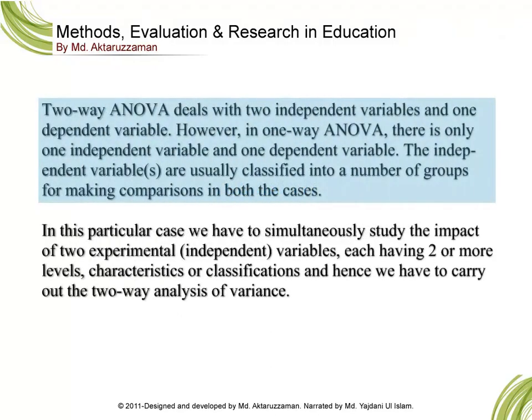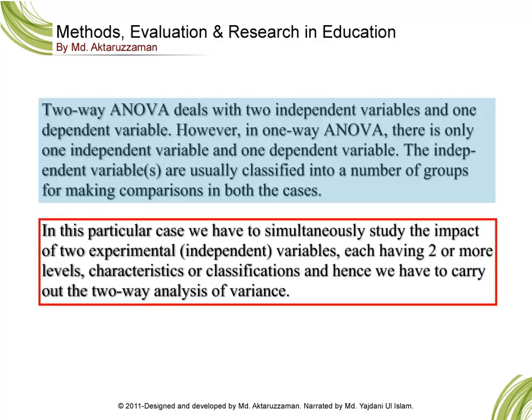Two-way ANOVA deals with two independent variables and one dependent variable. In one-way ANOVA there is only one independent variable and one dependent variable. The independent variables are usually classified into a number of groups for making comparisons. In this case we have to simultaneously study the impact of two experimental independent variables, each having two or more levels, characteristics, or classifications — hence we carry out the two-way analysis of variance.